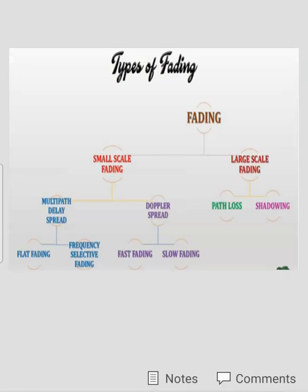This is the classification of fading. Fading is broadly divided into two types: small scale fading and large scale fading. These two types are basically dependent on the distance between transmitter and receiver. When the distance is very small, it is called small scale fading. When the distance is very high, the respective fading effect is called large scale fading. Large scale fading is further divided into two parts: path loss and shadowing effect.